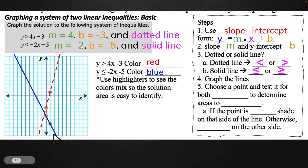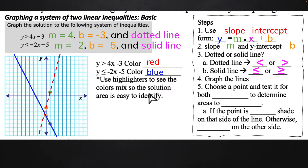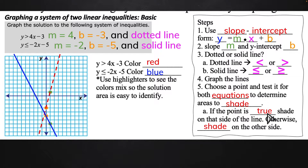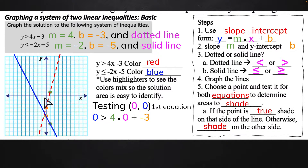Now we're not looking for just where they cross anymore — that was when we have a system of equations. With a system of inequalities, I want to know where the two shaded areas cross. So now we're going to do some shading using a test point. There are two options: you can use a test point, or you can look at the Y-intercept. Choosing a test point like 0, 0 is really easy because it kind of eliminates things very quickly.